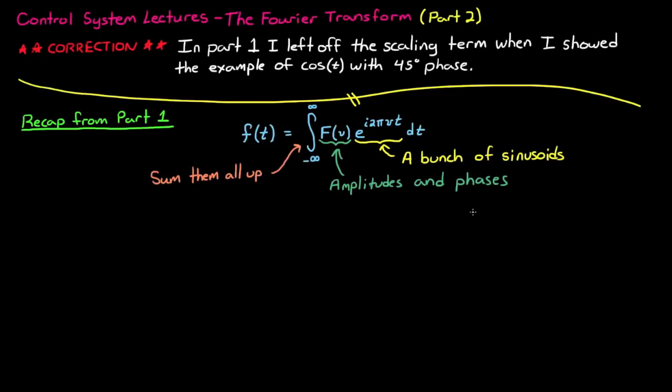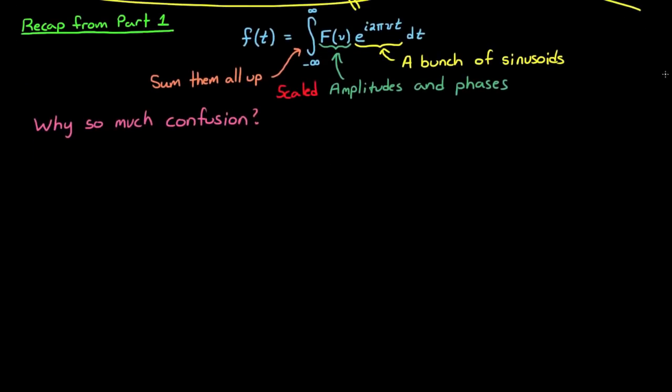Now my error in Part 1 was that I forgot to mention that the function f of nu is also scaled, so it doesn't directly represent the amplitude and phase information. And so in this video I'm going to try to explain why there's so much confusion about this scaling term and how it gets handled in the Fourier transform.